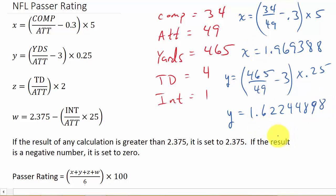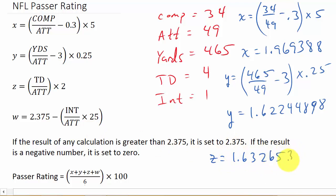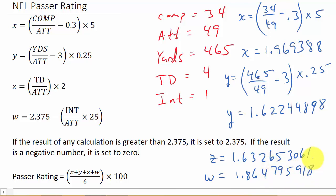Similarly, for Z, you would get 1.632651, and for W you would get 1.864795918.